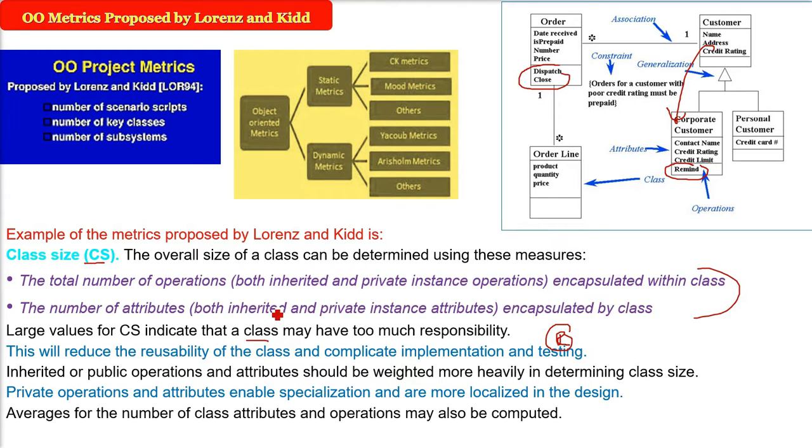So averages of the number of class attributes and operations, we can compute. And if you have low average values of this class size, it is more likely that classes within the system can be reused. They can be reused in other projects or in this only.